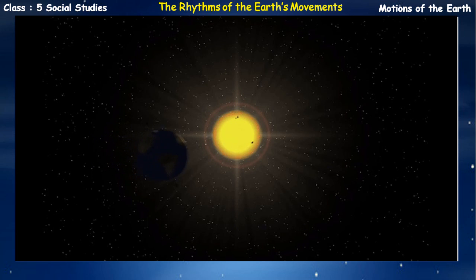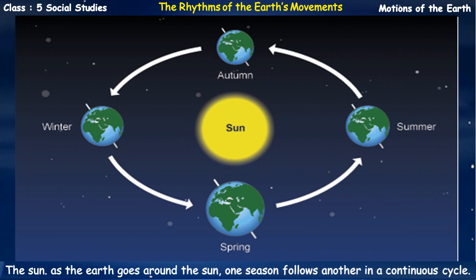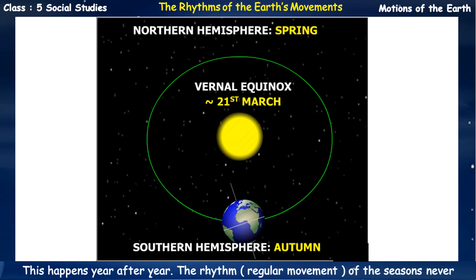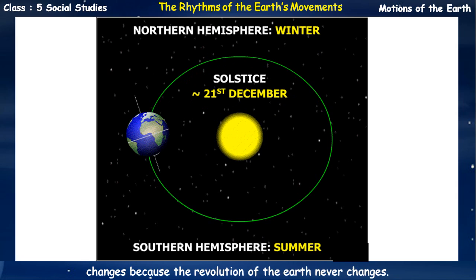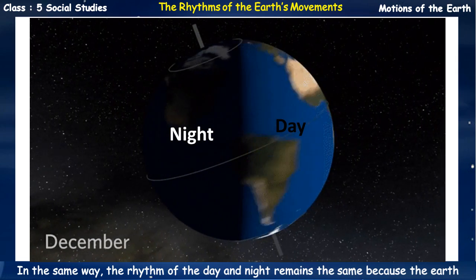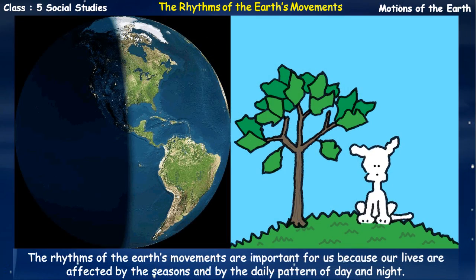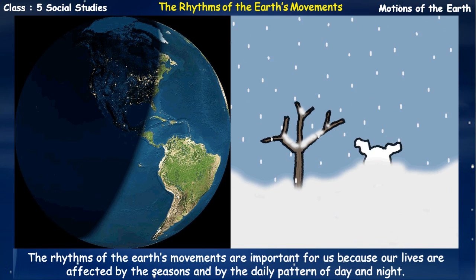The Rhythms of the Earth's Movements. We have seasons because of the tilt of the Earth's axis and the orbit of the Earth around the sun. As the Earth goes around the sun, one season follows another in a continuous cycle, and this happens year after year. The rhythm – regular movement – of the seasons never changes because the revolution of the Earth never changes. In the same way, the rhythm of day and night remains the same because the Earth always takes 24 hours for one rotation.